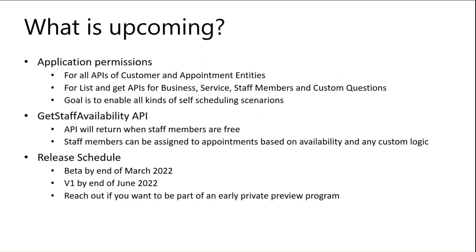Looking ahead, we have a lot of plans for the Bookings APIs. The most important is Application Permissions. We'll provide application permissions for all Customer and Appointment entity APIs, and for Business, Service, Staff Member, and Custom Questions we'll provide application permissions for the read APIs (Get and List). The goal is to enable self-scheduling scenarios. We're also building a Get Staff Availability API that returns when staff members are free. Together, these will enable full self-scheduling. The beta is planned by end of March 2022 and v1 by end of June 2022. Reach out if you'd like to join an early private preview.